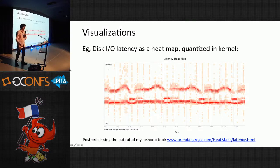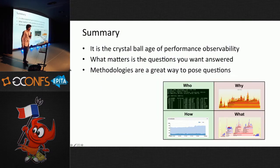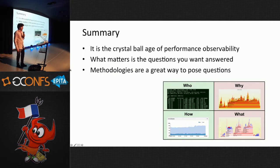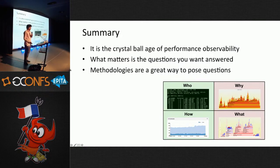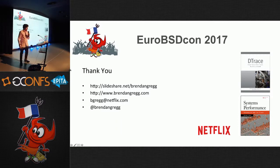Visualizations is the last takeaway — we need to do better with visualizations in monitoring products. Latency heat maps should be a common staple. We're in the crystal ball age of performance observability: whatever questions you want can be answered. Methodologies like those I've summarized are a great way to pose those questions. Slides will be posted online with all the references and resources.